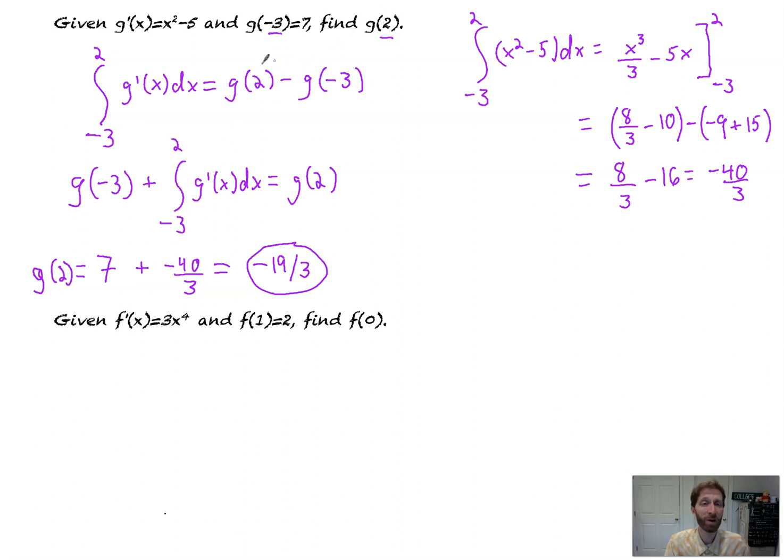Oh, g of 2? Yeah, don't know it. Leave it as a variable. Oh, g of negative 3? I should add that to both sides. And it's 7. And then combine all the pieces of information. Give yourself those ingredients.